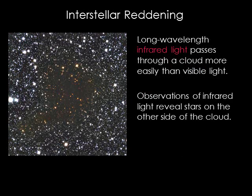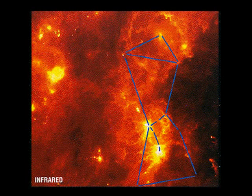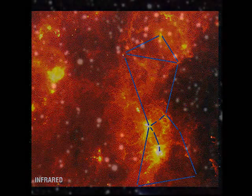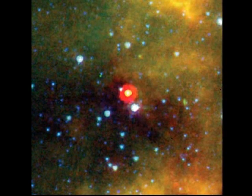Long wavelength infrared light passes through a cloud more easily than visible light. Therefore, observations in infrared light can reveal stars on the other side of the cloud. For example, the constellation Orion looks much different in the infrared. The bright region below the belt stars is an area of active star formation.